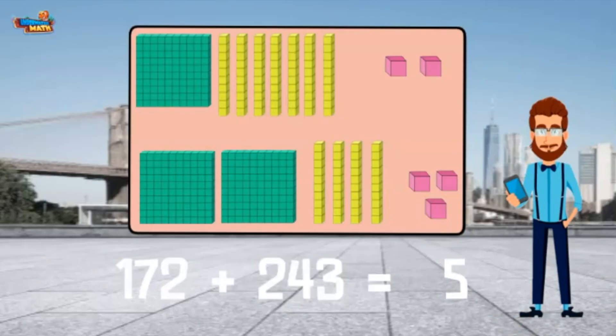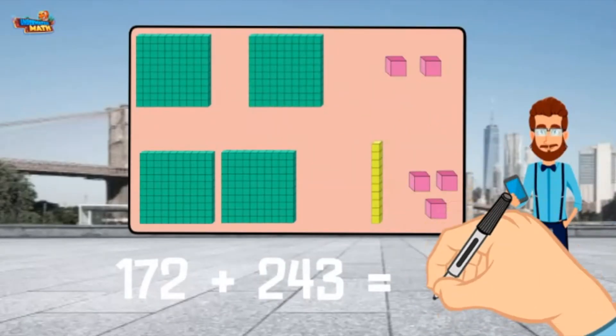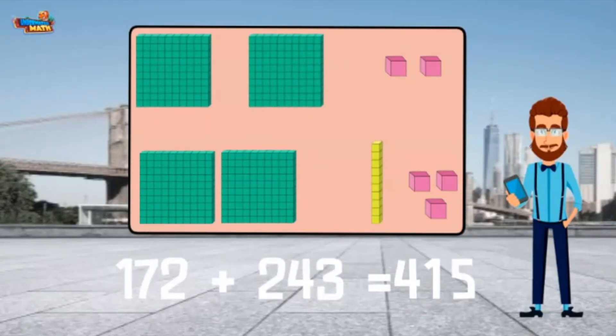5 ones, 11 tens. Wait, I need to regroup those. I can regroup 10 tens as 100. I now have 1 ten and 4 hundreds. 172 plus 243 equals 415.